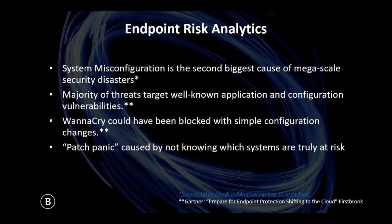If the endpoints were properly hardened and the SMB protocol was properly configured, endpoint security wouldn't have made a difference because WannaCry would have never been able to execute on the machine in the first place. The whole goal with endpoint risk analytics is to identify the system misconfigurations on the endpoint, make it easy for admins to see those misconfigurations, and then be able to go into group policy or on the endpoint individually to harden that particular misconfiguration.